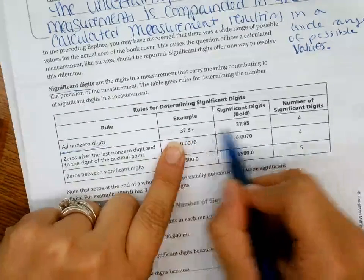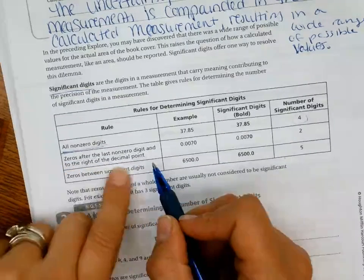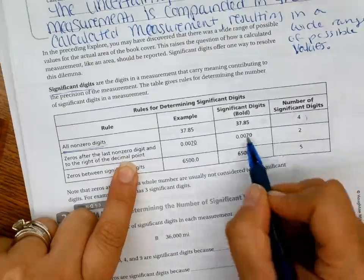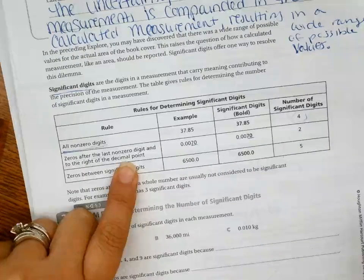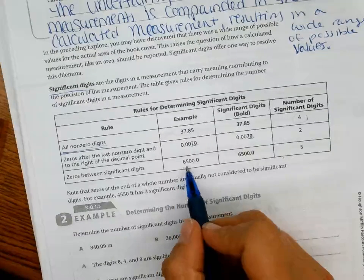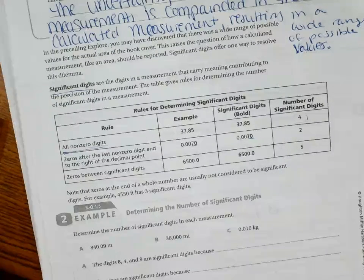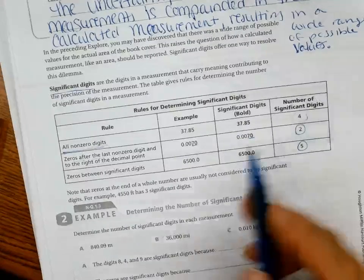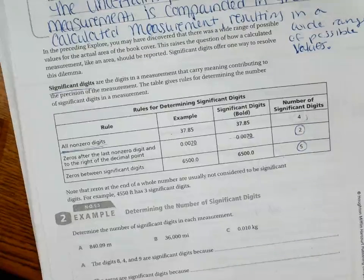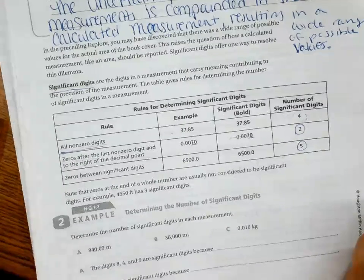So all non-zero digits, all non-zero digits, so one, two, three, four, so it has four significant digits. Zeros after the last non-zero digit and to the right of the decimal. So how many significant digits? One, two, three, four, five. This one has five significant digits. This one has four, this one only has two. So basically if there's these leading zeros, they kind of like just cancel out. But if you have numbers ahead of them, then they count.